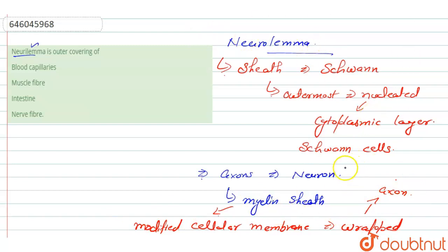So we have seen that this neurolema is present around the axon, that is the axon of a neuron. So this means that it is the outer covering of the nerve fibers—nerve fiber—that associate with the nervous system.